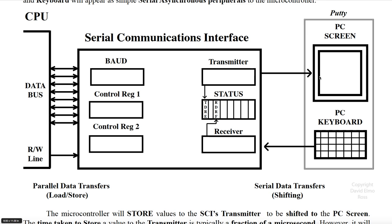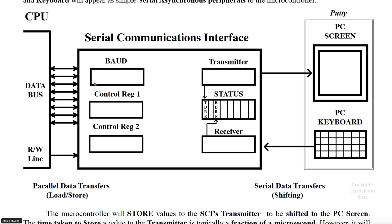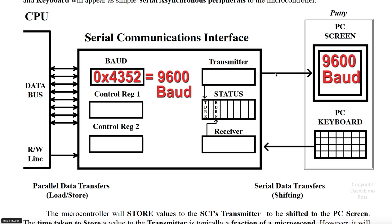Typically, to save power, devices are disabled when the microcontroller is first turned on. The clock for this device must be turned on to enable it, even for our asynchronous ASCII. The next major step is to set up our baud rate, and to do 9600 on this particular device we have to put in the hex value 4352. The baud rate for PuTTY must also be set to 9600, otherwise the microcontroller will not be able to communicate with the PC running PuTTY.